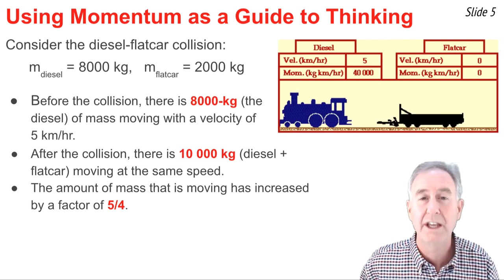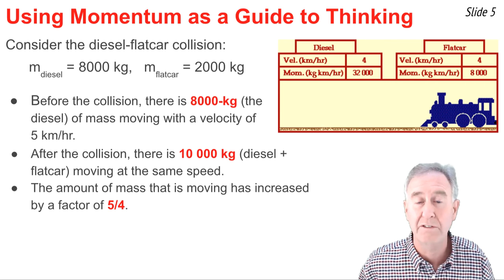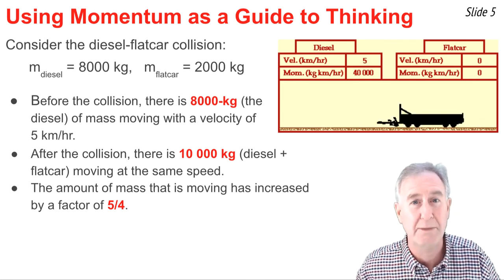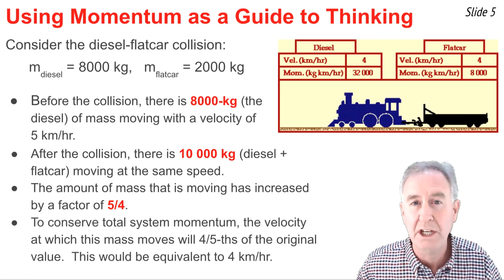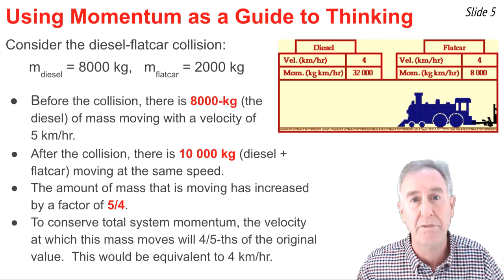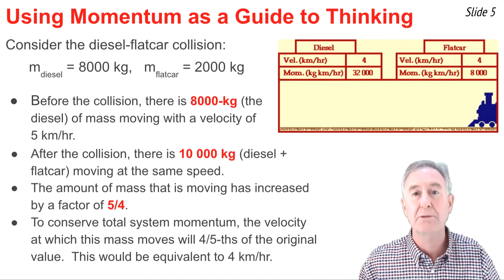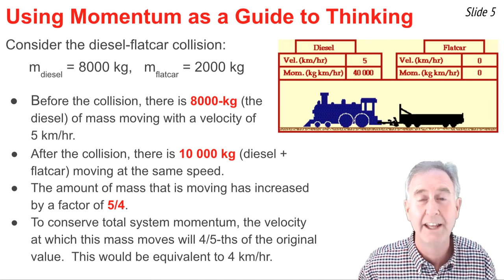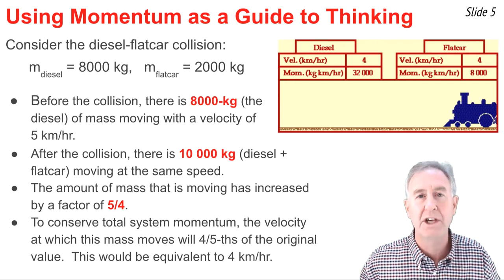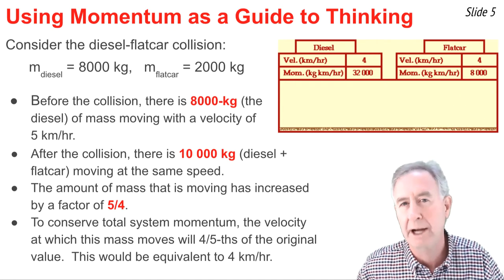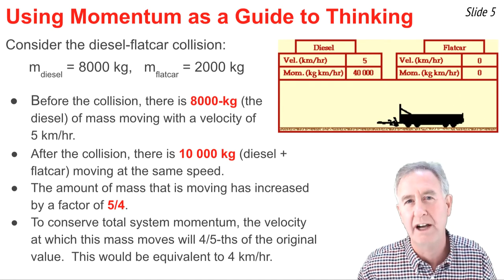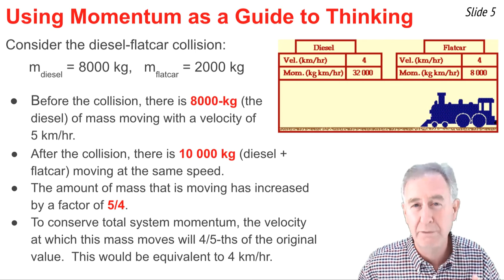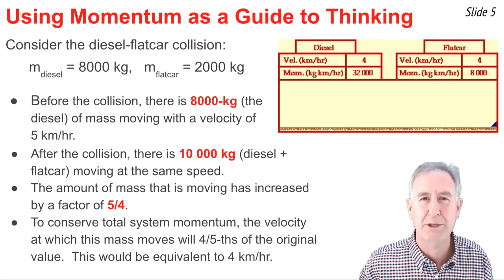In order for momentum to be conserved, the speed at which this increased mass is moving must decrease by a factor of 4/5 — it must be 4/5 of the original speed. So we take 5 km/h and divide by 1.25, or multiply by 4/5, and we get 4 km/h.